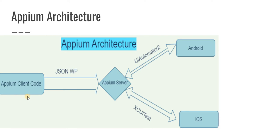At the beginning of the Appium architecture, there is the Appium client code. In simple terms, you need one of the IDEs like Eclipse or VS Code to write your code — you are the client writing automation code through one of these editors. You're going to write your automation code using any one of the supported languages, since Appium accepts multiple languages like Java, JavaScript, Python, C#, and Ruby, including the Appium library.